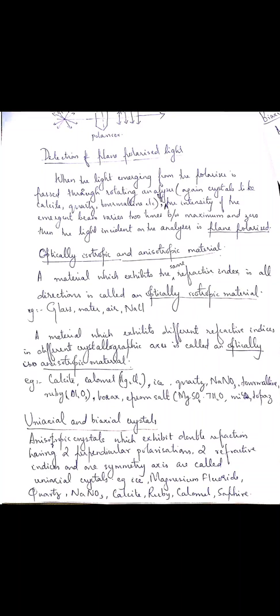The same crystals like calcite, quartz, and tourmaline are again used as analyzers. Both the polarizer and the analyzer use these crystals. Next, what you have to learn is the different methods for the production of polarized light. Primarily, we have to learn three methods: polarization by reflection, polarization by refraction, and polarization by double refraction.